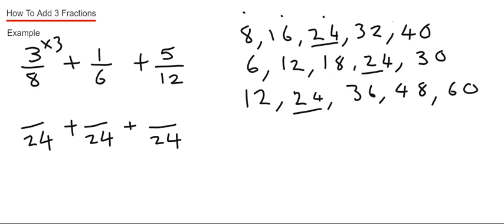How many times did 6 go into 24? That went four times, so we need to times this top number by four. One times four is four.